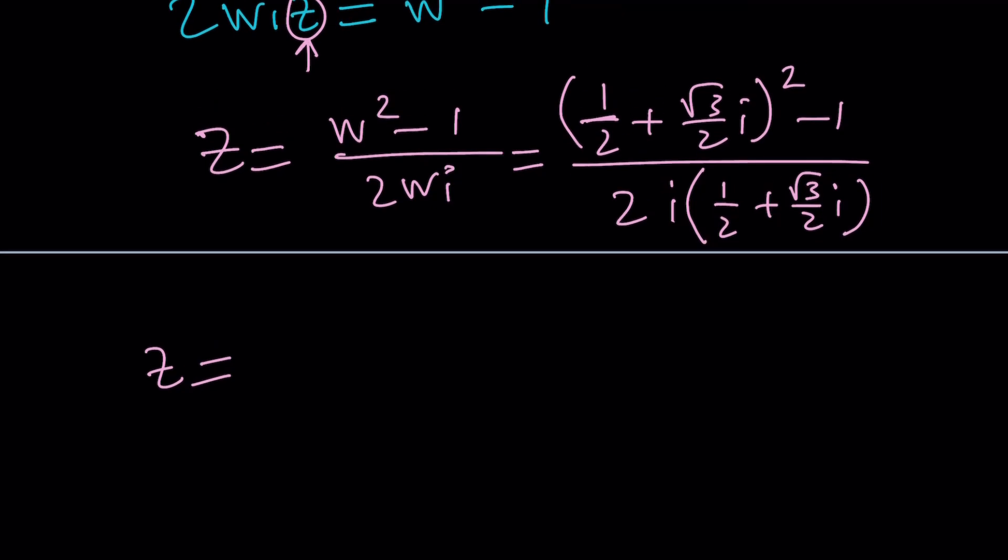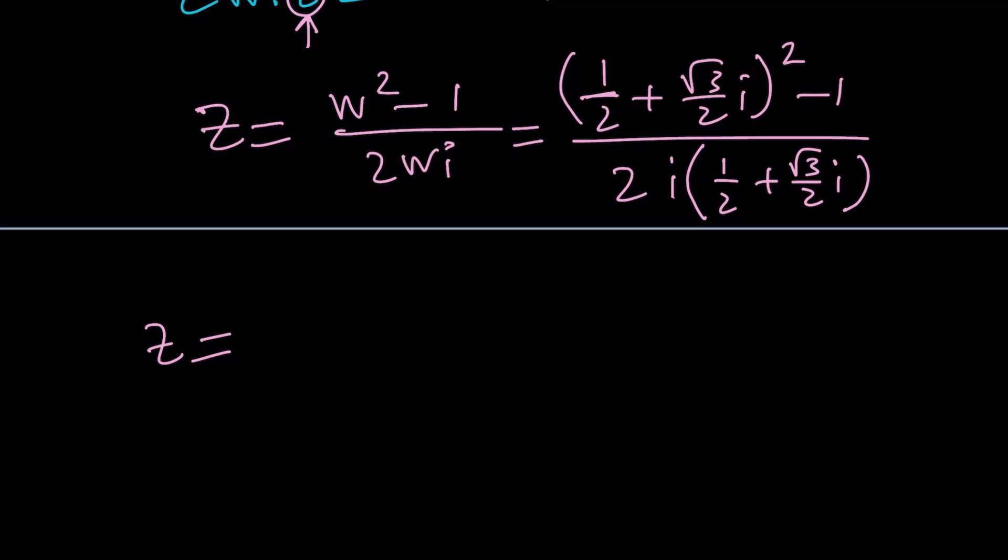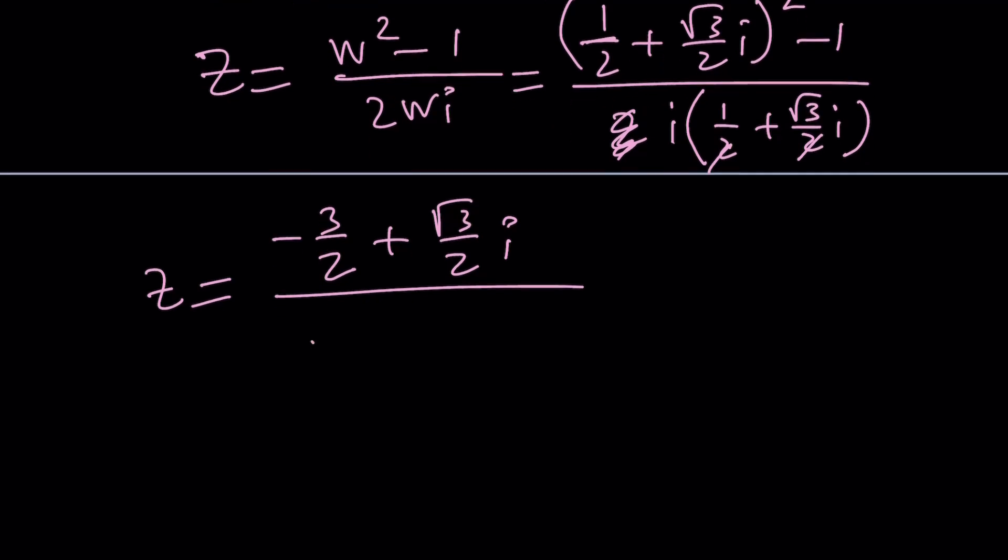And I don't know if there's a shortcut here, but I guess we could separate this too. Let's go ahead and plug it in. W is 1/2 plus root 3 over 2i. Remember that from cosine of 60 and sine of 60. We're going to square this, subtract 1 from it. And at the bottom, we're going to multiply 2i by w. Let's just write the 2i first.